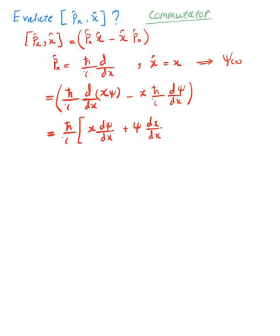And minus the last term, we have x multiplied by d psi over dx. Now we cancel this term with this term—they will be cancelled—and we're left with psi times dx over dx, and this term equals 1.